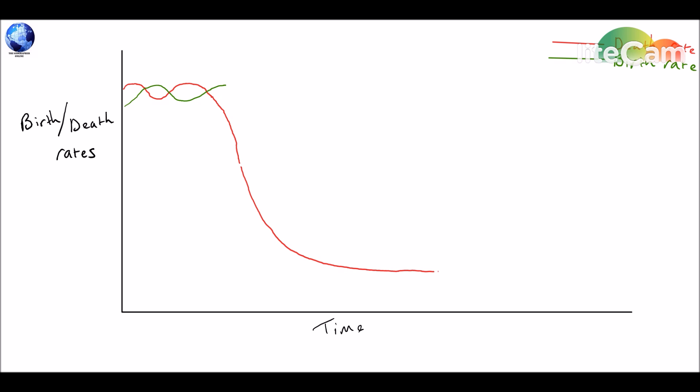Now firstly, I'm just going to draw the basic lines. Red represents death rates, and green represents birth rates. And as you can see, this is a generic shape of the demographic transition model.